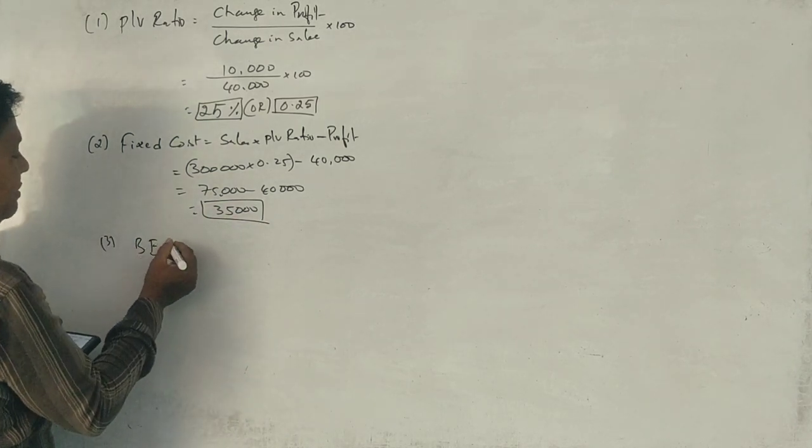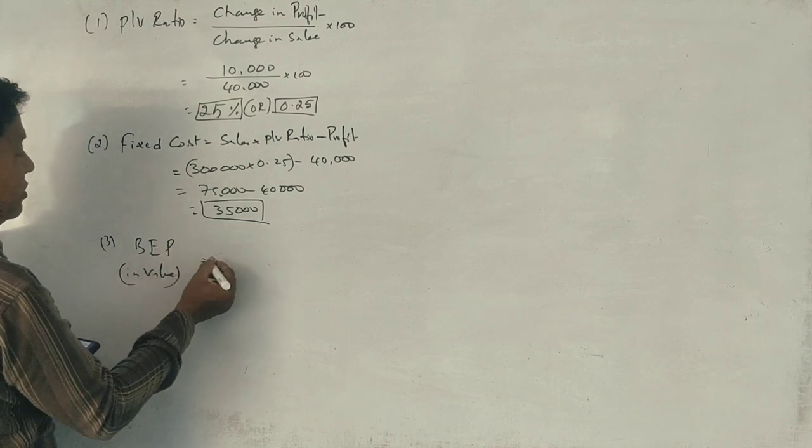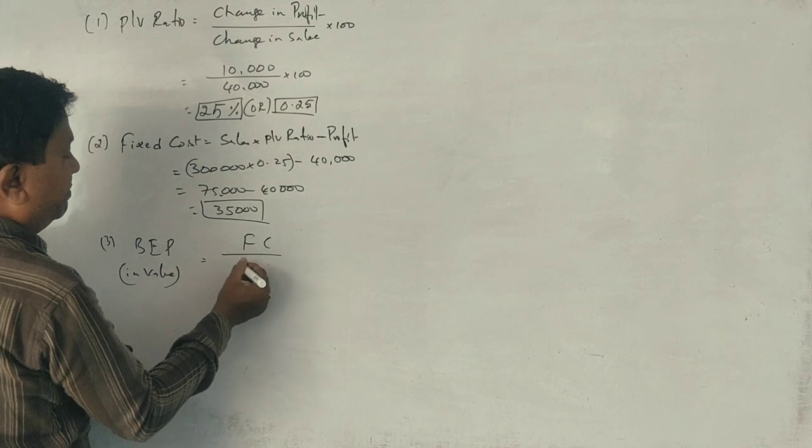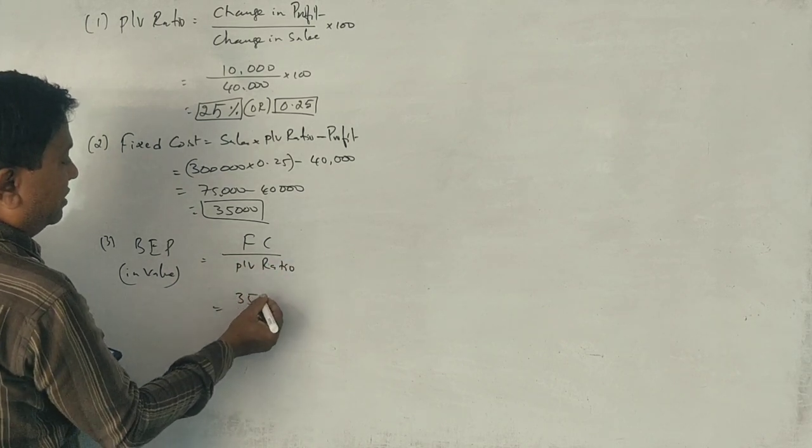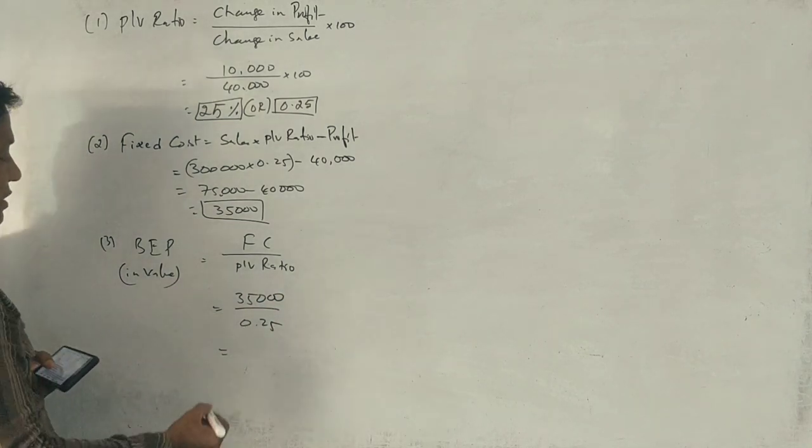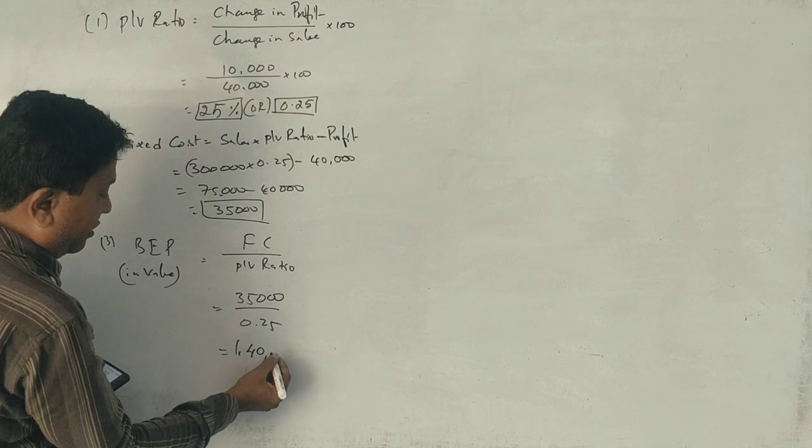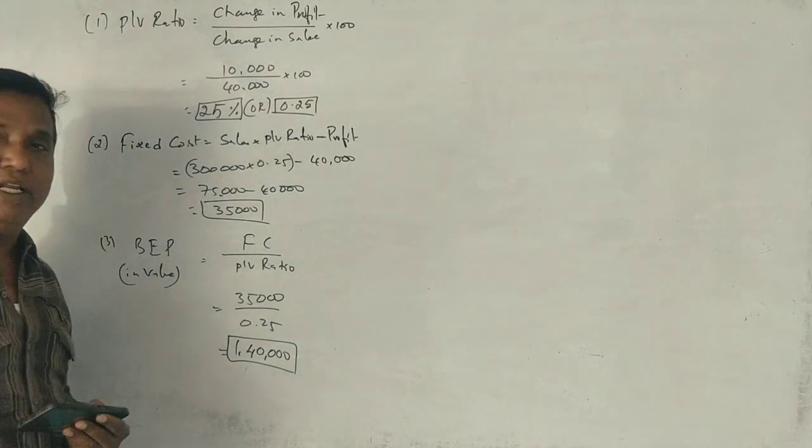Break-even point in value equals fixed cost divided by PV ratio. Fixed cost is 35,000, PV ratio is 0.25, so 1 lakh 40,000 rupees.